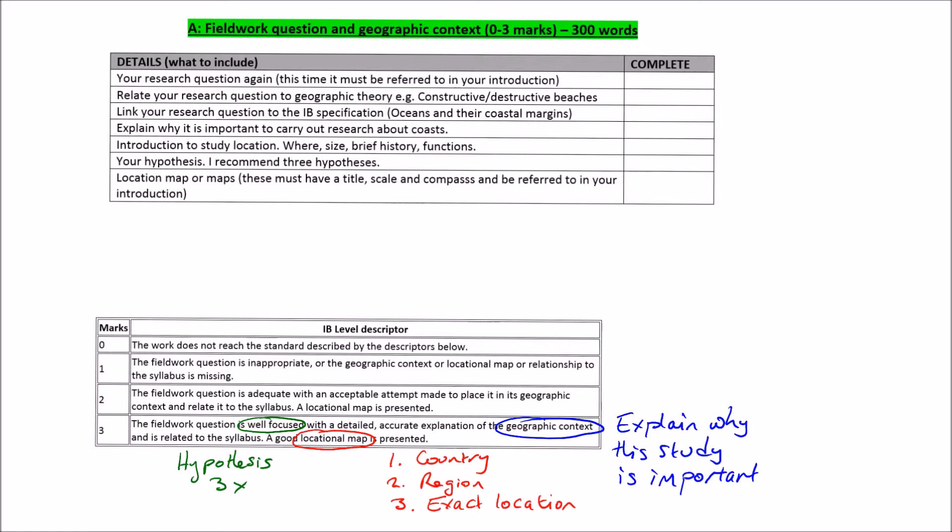Like I said, number one, mention your research question. Relate your research question to your geographical theory. So why and how is it linked. Link your question to the IB specification. In the example that I use, we look at oceans and the coastal margins.